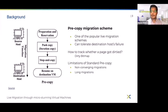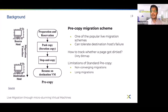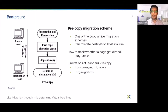Here is an overview of how pre-copy live migration works. First there is a preparation phase where we enable dirty tracking, then we start sending guest memory to the destination host. Pre-copy live migration works in multiple iterations. In the first iteration we transfer the full memory of the guest, and from the second iteration onward we transfer memory which was dirtied while the previous iteration was going on.